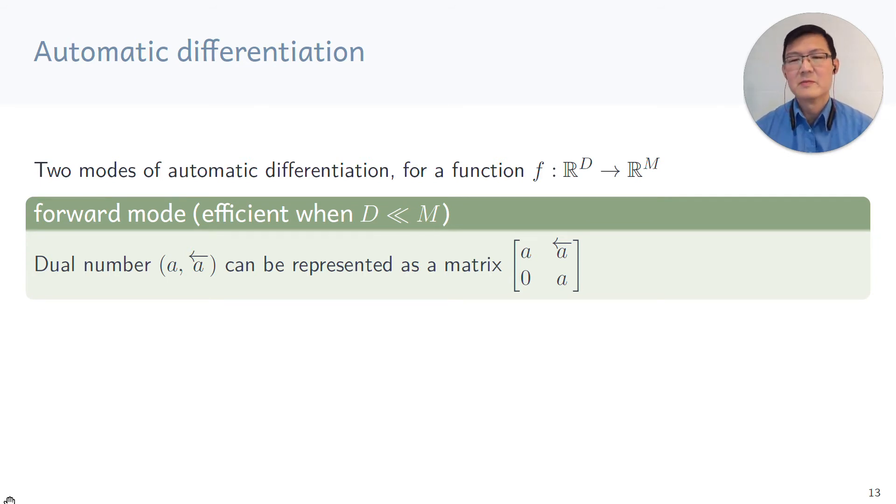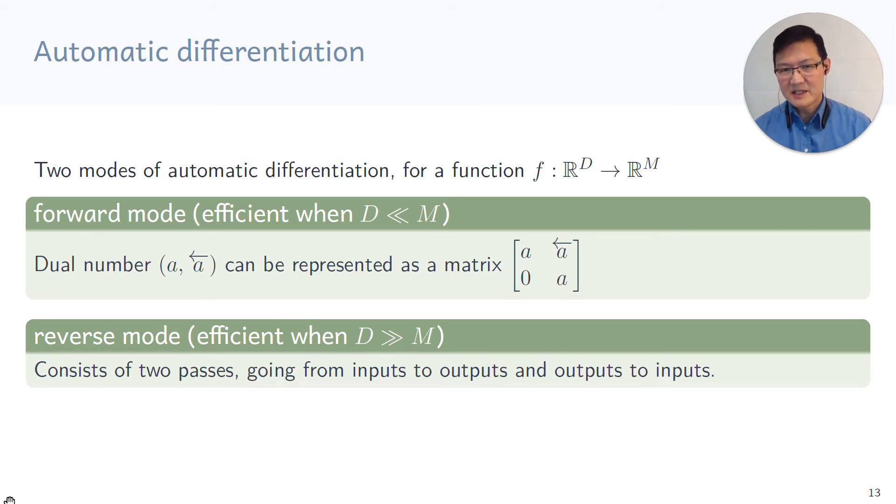Back to the question of the two different modes of automatic differentiation. Imagine we have a function f that takes us from a d-dimensional vector to an m-dimensional vector. The forward mode is particularly efficient when d is much smaller than m. In reverse mode automatic differentiation, this is efficient when d is much bigger than m. In many machine learning applications, the function f takes you from a high dimensional input d to a single scalar, which means that m equals 1. So the reverse mode of automatic differentiation is much more popular in machine learning. What makes things a bit more confusing is that the reverse mode consists of two passes, one going from inputs to outputs and outputs to inputs, not just one way.